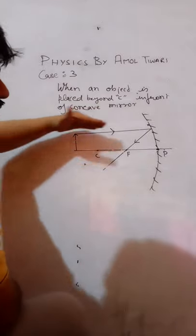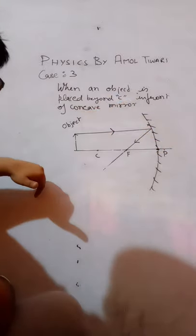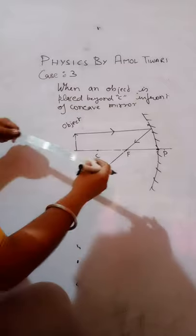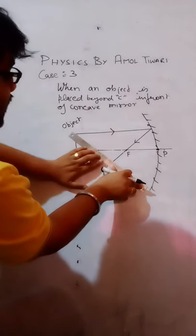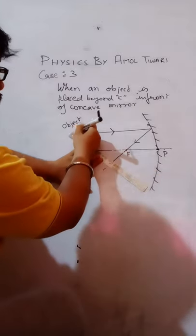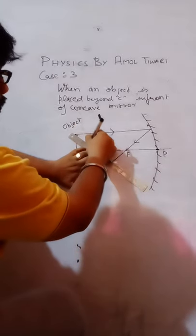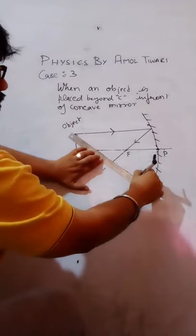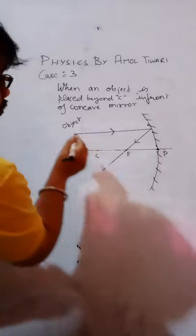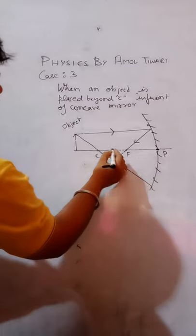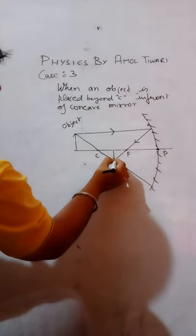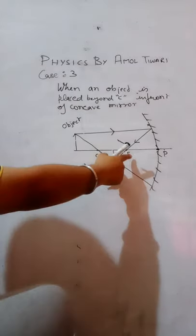One, a light ray parallel which is passing through the focus. Now you have another case, a light ray, a slant light ray which will pass through the center of curvature like this. A light ray which will pass through the center of curvature like this. In that situation, the image will be formed here between C and F.